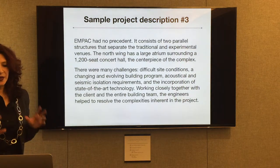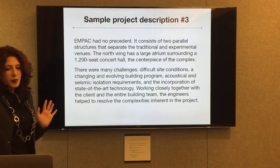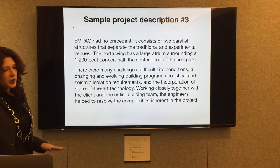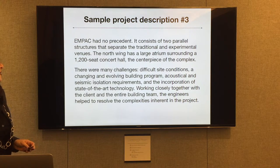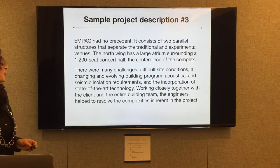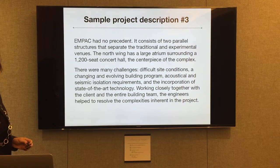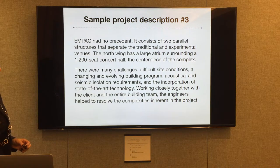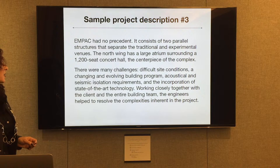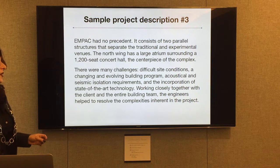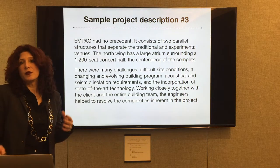Now here's an example that's a little more clear and gets to the point without being bogged down by jargon: 'It consists of two parallel structures that separate the traditional and experimental venues. The north wing has a large atrium surrounding a 1,200-seat concert hall, the centerpiece of the complex. There were many challenges — difficult site conditions, a changing building program, acoustical and seismic isolation requirements, and state-of-the-art technology. Working closely with the client and the entire building team, the engineers helped resolve the complexities inherent in the project.'